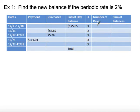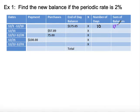For 10 days our balance was $175.65 each day, so we multiply that by 10 and get a balance of $1,756.50. We'll average everything together at the end, so we'll hold on to that.